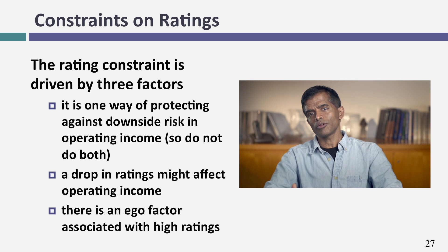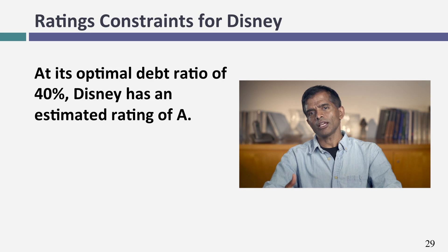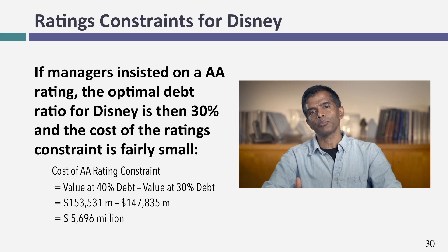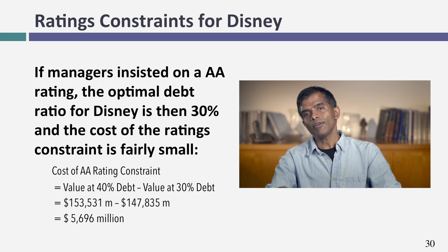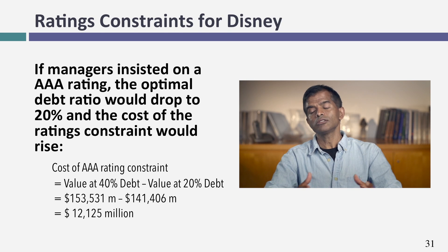It's reasonable for companies to put a ratings constraint — that could be triple B or even single A. But if a company puts in an unrealistic constraint, the cost must be put on the table. For Disney at their optimal 40%, I give them a synthetic single A rating, which is actually quite good. If they insisted on double A, they'd have to stop at a 30% debt ratio, costing them about $5.7 billion. If they want triple A, they can't go above 20%, costing about $12.1 billion. When companies demand unreasonable rating constraints, it costs stockholders billions — and that has to be made explicit.